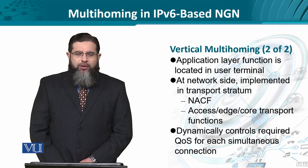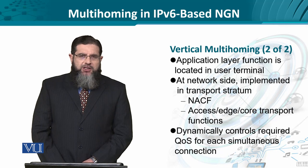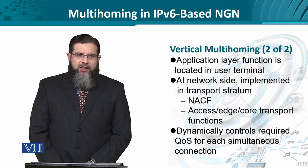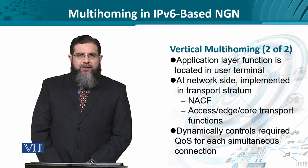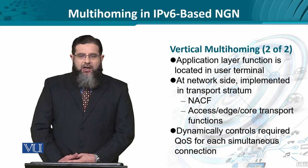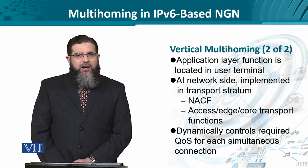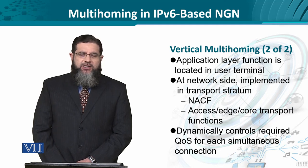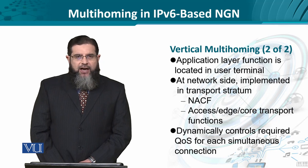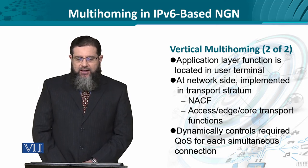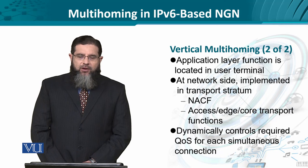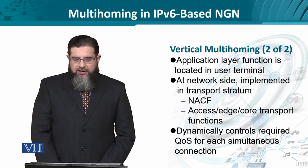The operating system is assumed to handle vertical multihoming. The application layer function is implemented in the OS on the user/host side. On the network side, it is implemented in the transport stratum and the service stratum. At the transport stratum, the network attachment control function must be aware that vertical multihoming is being implemented on the host side, which in turn affects transport functions on the access edge and core side. This helps dynamically control the required quality of service expected in a certain SLA by the client for simultaneous connections.